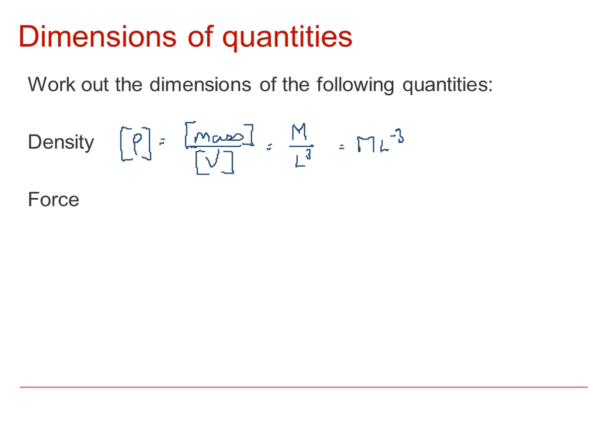For force, we've got an equation F equals MA. So the dimensions of force equal the dimensions of M multiplied by the dimensions of A, acceleration. We've already seen that acceleration was L T to minus two. Therefore, the dimensions of force are M L T to minus two.